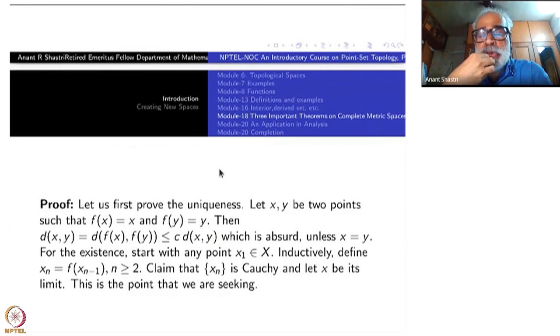Once again, proof is this time slightly little longer than the proof for Cantor's Intersection Theorem. So let us first take care of uniqueness. Suppose there are two points x and y such that f(x) is equal to x and f(y) equal to y. Then d(f(x), f(y)), which equals d(x,y), is less than c times d(x,y) because it is a contraction mapping. But c is less than 1. So this is absurd unless d(x,y) is 0, which is the same thing as unless x is equal to y.